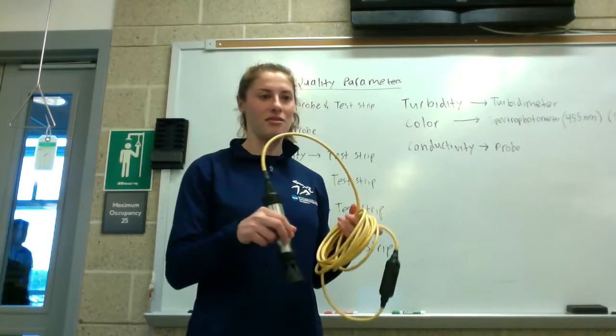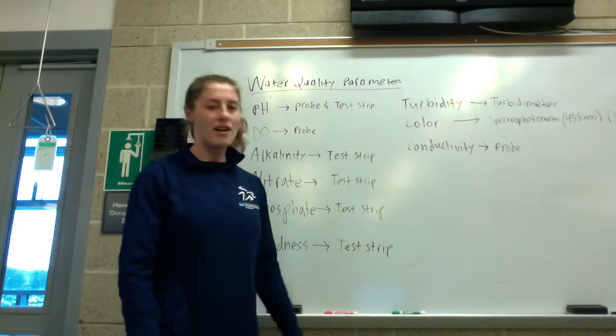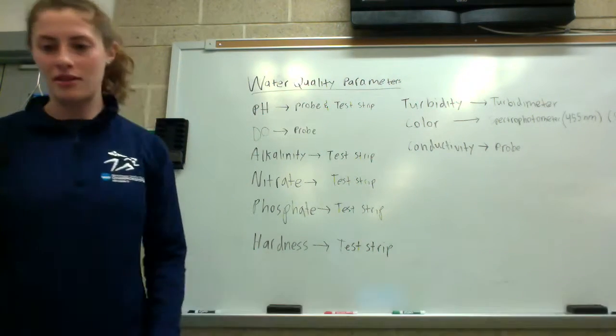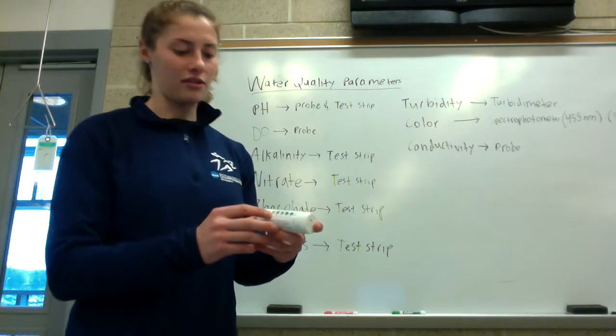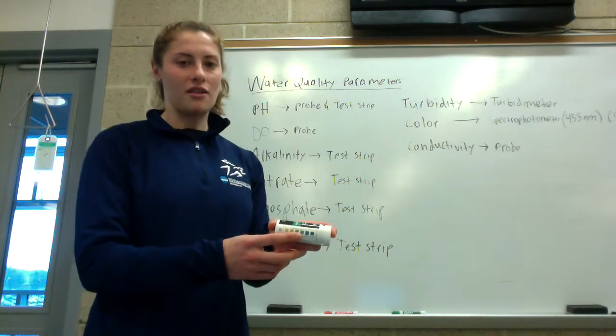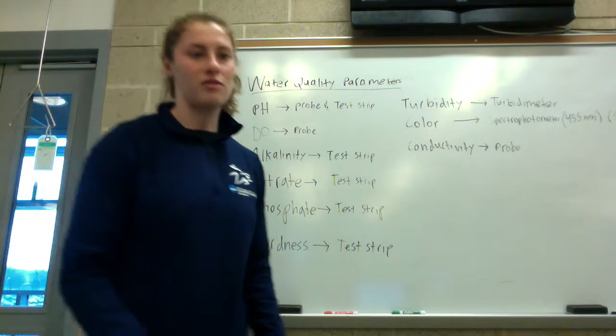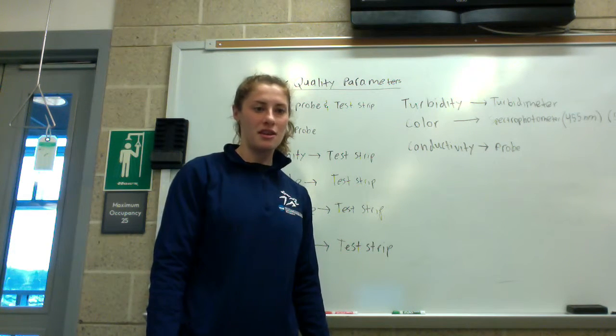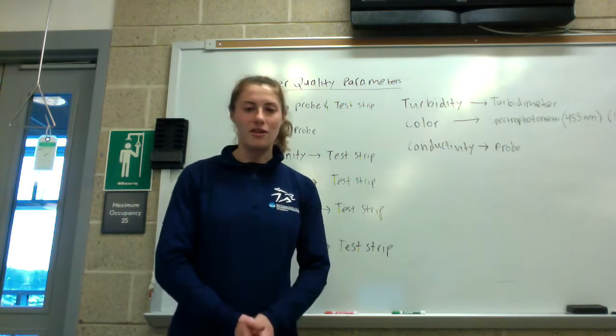The next water quality parameter is alkalinity, which you can measure using a test strip. Take a test strip, stick it in the water, and it will give the reading. It's measured in milligrams per liter of CaCO3. The importance of alkalinity is to measure the capacity of the sample to neutralize acids. There are three major classes: hydroxide, carbonates, and bicarbonates.